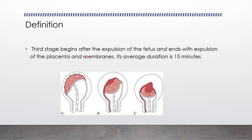What is the third stage of labor? It begins after the expulsion of the baby and ends with the expulsion of the placenta. This is the third stage of labor, with an average time period of 15 to 20 minutes.